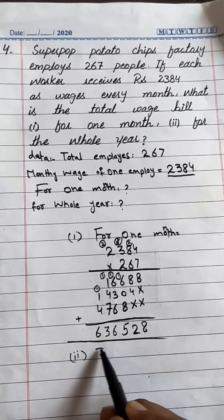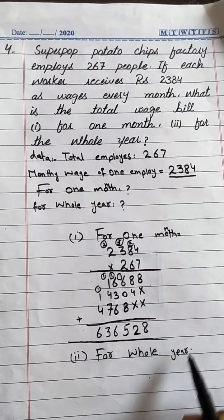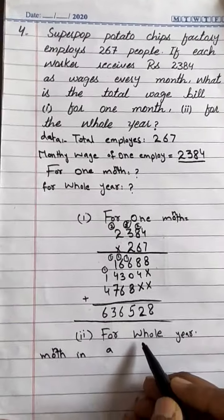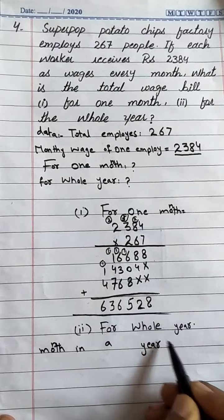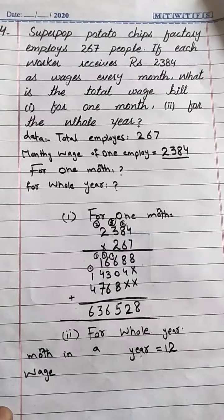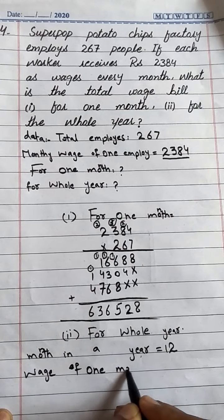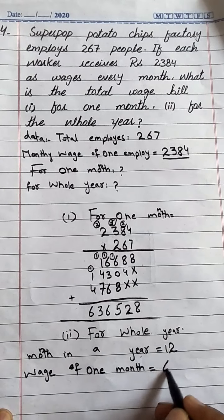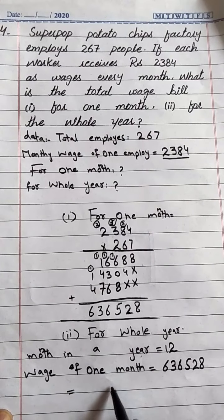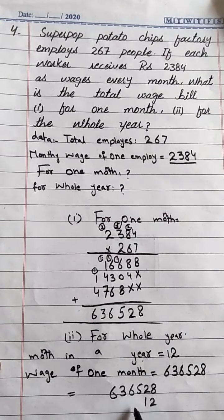Now we have to find the wage for the whole year. There are 12 months in a year. So the wage for 1 month is 636,528. We need to multiply 636,528 by 12.